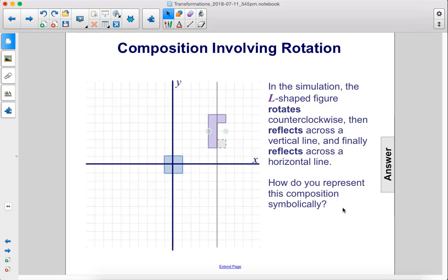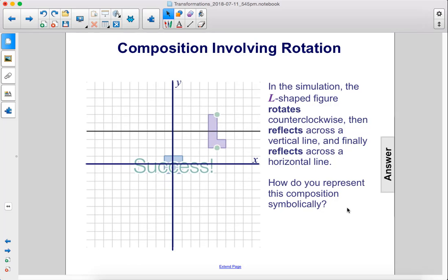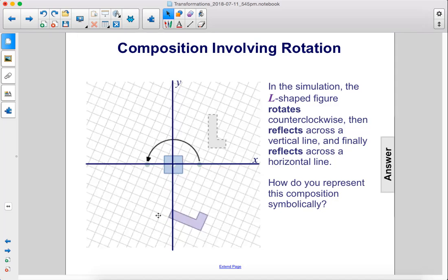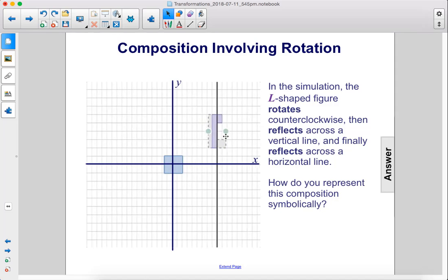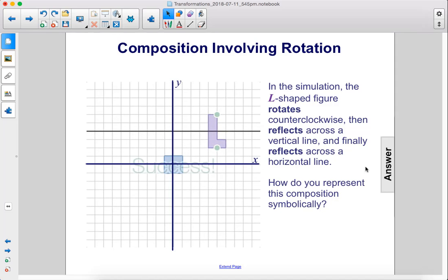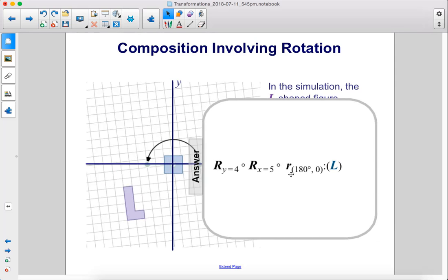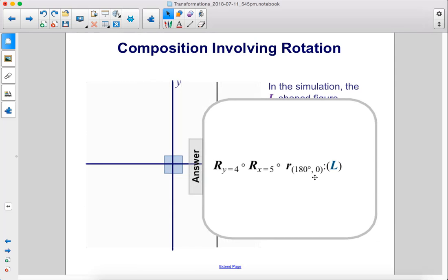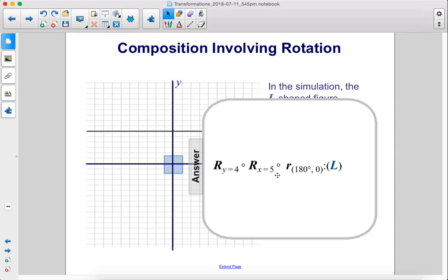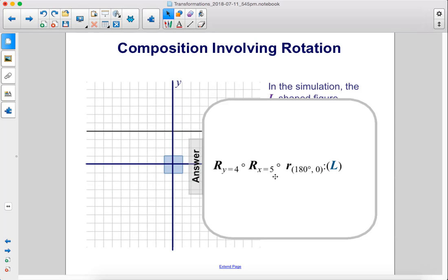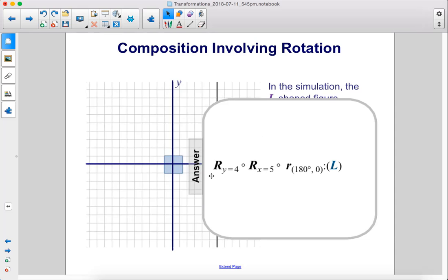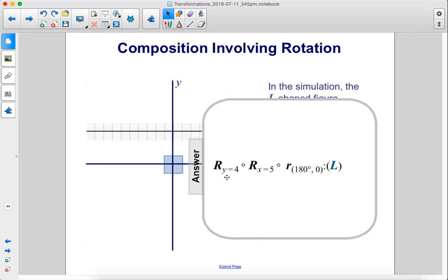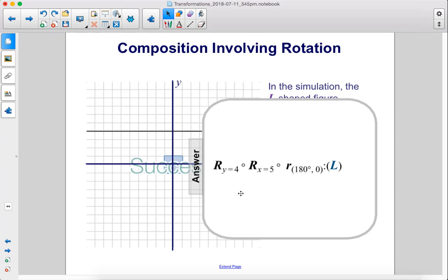How do you represent this composition symbolically? Let's watch one more time. We rotate around, reflect vertically, reflect horizontally. So we have first the rotation, 180 degrees about the origin, then we have a reflection across the line x equals 5, the vertical line, and then we have a reflection across y equals 4, or the horizontal line.